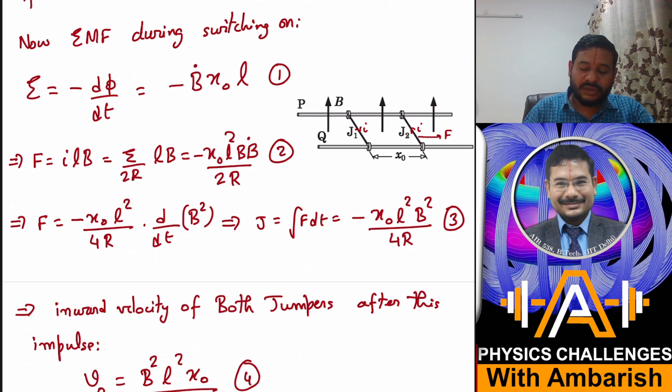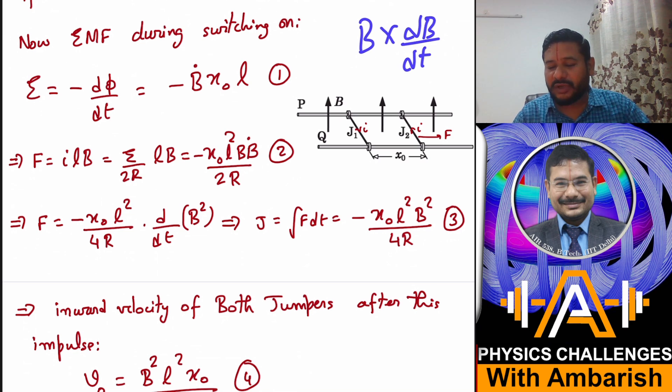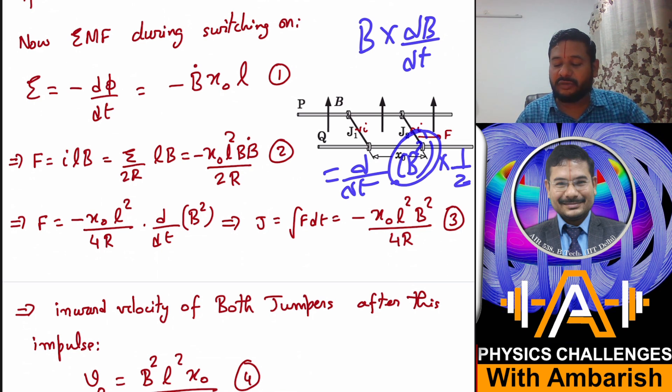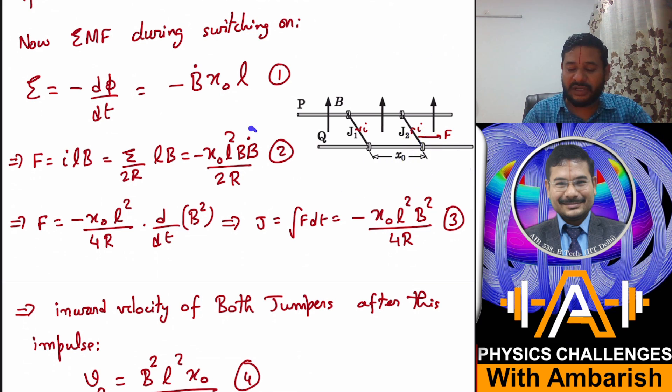I have done something very carefully here. B into Ḃ, that is B into dB/dt, that is nothing but - you can always write it as equal to d/dt of B² times 1/2. Because if you take the derivative of B², it becomes 2B·dB/dt, and to cancel that 2 you put a half. So that's what I have done. Instead of B·Ḃ I have written B² and taken a 2, so this 2R becomes 4R and this becomes derivative of B².